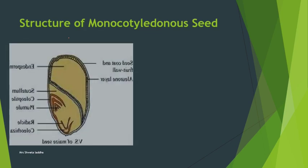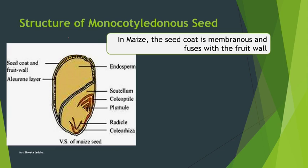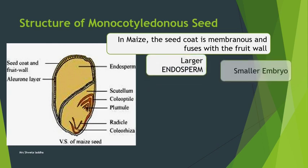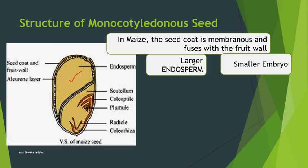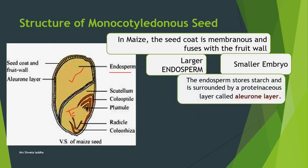Now let us see the structure of a monocot seed. In monocots there is a single cotyledon. Taking maize as an example, the seed coat is membranous and fuses with the fruit wall. The seed is divided into two parts: the larger part is the endosperm, and the smaller part is the embryo. Monocot seeds are usually endospermic seeds. The endosperm stores starch and is covered by a proteinaceous layer called the aleurone layer, which is made up of protein.